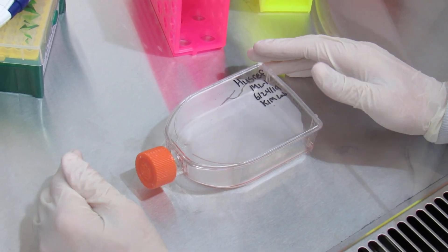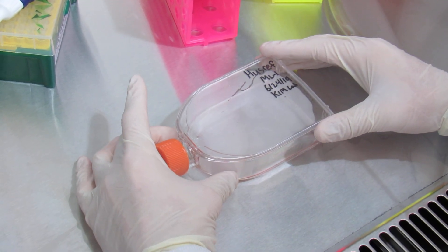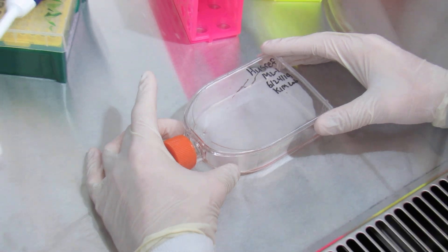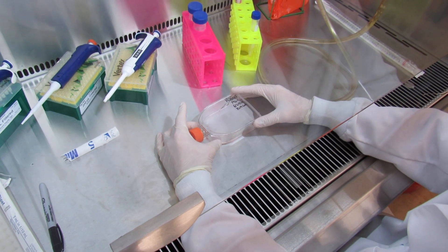After you've done this, you're going to move your 25 centimeter cubed flask and you're going to set it in the incubator for 15 minutes.